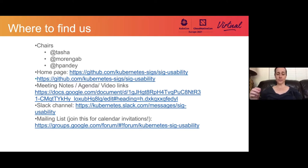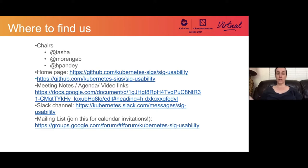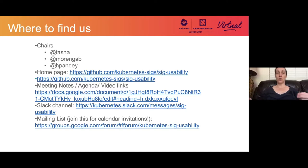We also have a Slack channel in the Kubernetes Slack — just SIG-Usability. And the most important starting point to get involved is to join our mailing list, which is a Google group. If you join, you'll see all our calendar invitations. We have monthly meetings where we talk about our latest research. Anyone can add a new topic to the agenda. All meetings are recorded. Joining the Google group is the single easiest way to get started with SIG Usability.